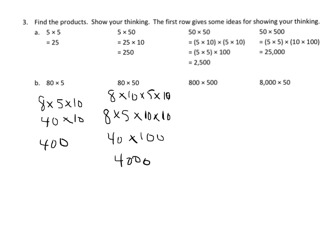So at this point, we're really looking at using that shortcut. 800 times 500—I'm going to do a little bit of commutative property. Let's do 8 times 100 times 5 times 100.